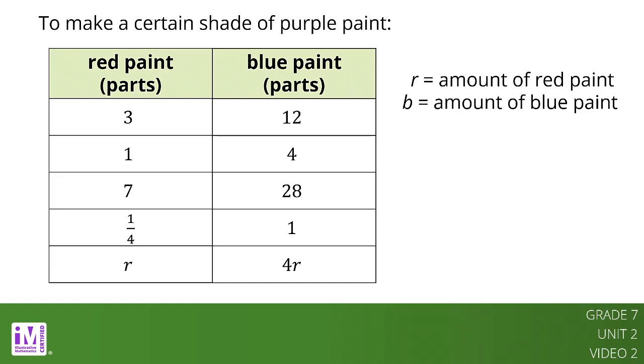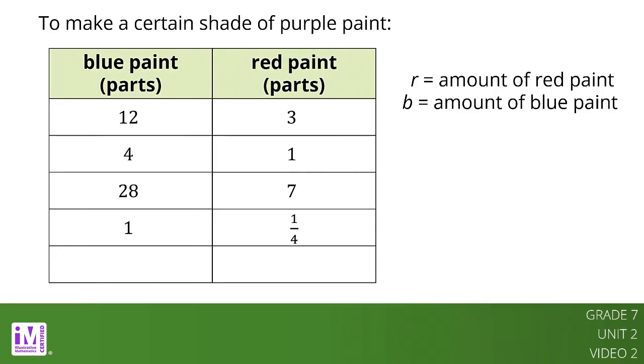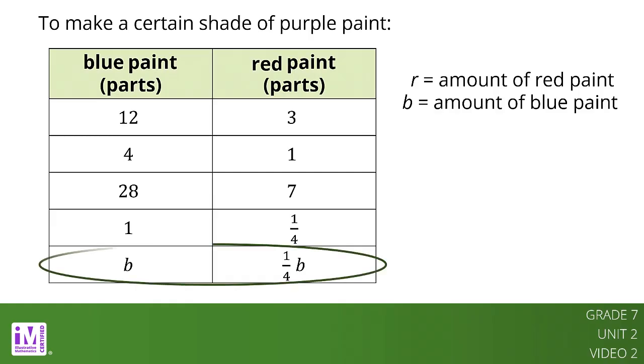We can also look at this relationship the other way around. Now the blue paint is in the first column and the red paint is in the second column. If we know the amount of blue paint needed, B, we can always multiply it by 1 fourth to find the amount of red paint needed to mix with it to make Venusian sunset. So, R equals 1 fourth B. The amount of red paint is proportional to the amount of blue paint and the constant of proportionality is 1 fourth.